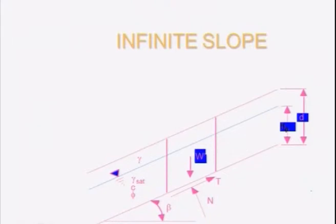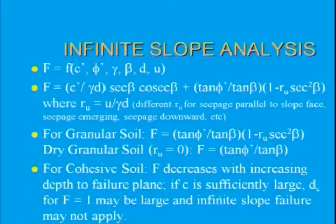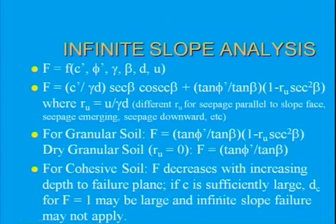In the infinite slope, consider a small element. Let γ be the unit weight above the water table. Below the water table, soil properties are γ_sat, C, and φ. W is the weight of the mass with normal and tangential forces. D is the depth of the infinite slope. The force is a function of C', φ', γ, β, D, and U.